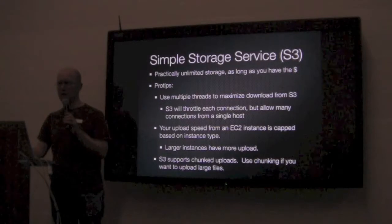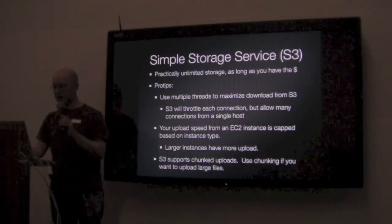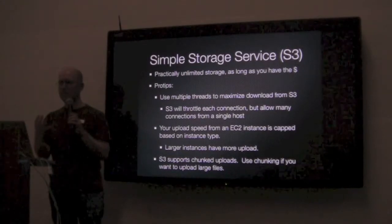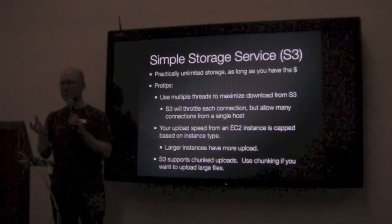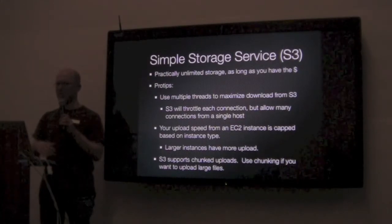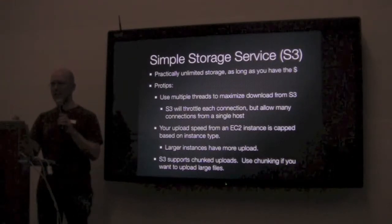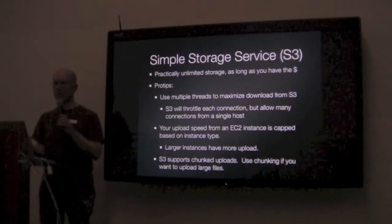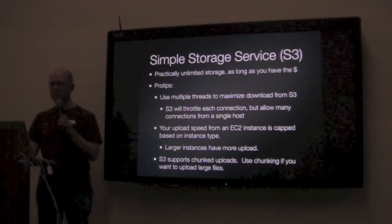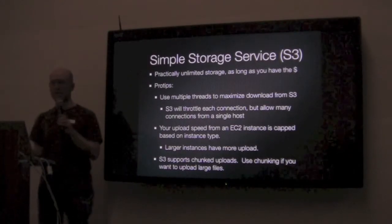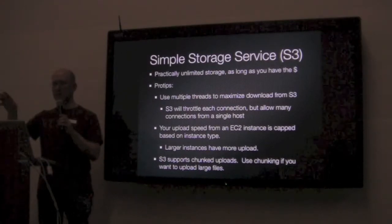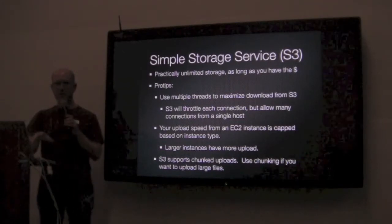S3 also supports BitTorrent by default — if you put something on S3 you can just download it with BitTorrent, which is neat. On the upload side, when uploading from an EC2 instance, the size of that instance — which normally equates to how much you're paying for it — determines your upload speed. Amazon doesn't really publish these numbers but people have done benchmarks, and the more expensive instances have faster upload. So if users are uploading large pictures that need to go to S3, you may want to use a larger instance or upload directly to S3.